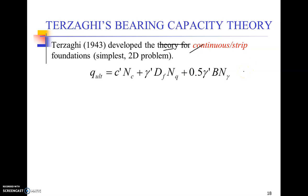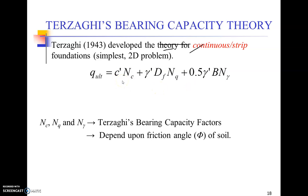Now we need to understand this equation. This equation has got three components on its right-hand side. Over here, Nc, Nq, and N gamma are the constants which are generally referred as the Terzaghi's bearing capacity factors, and their values would depend upon the angle of internal friction of the soil upon which the foundation is being constructed.